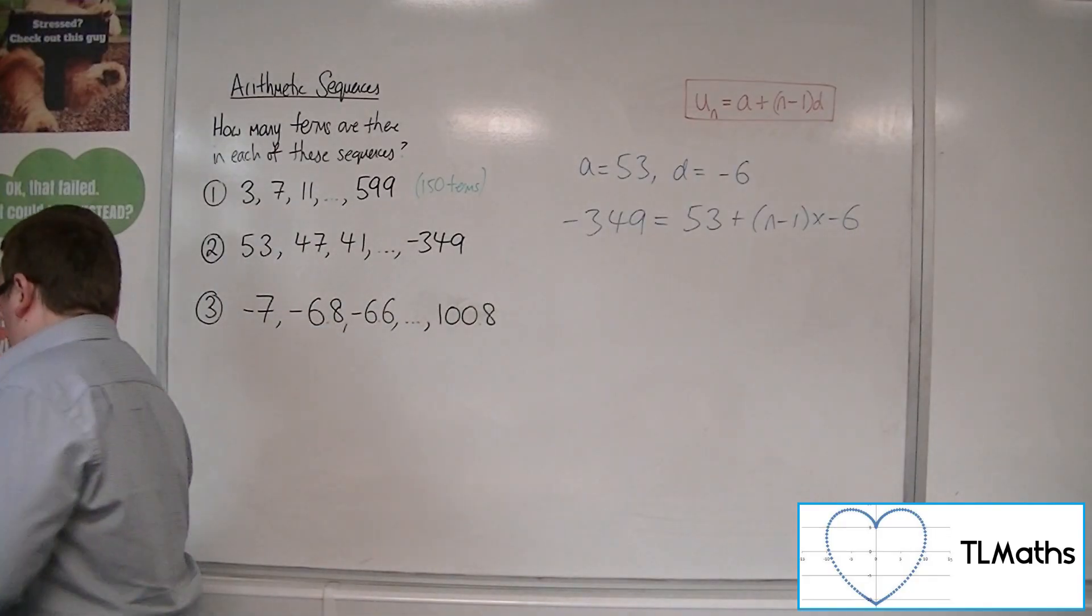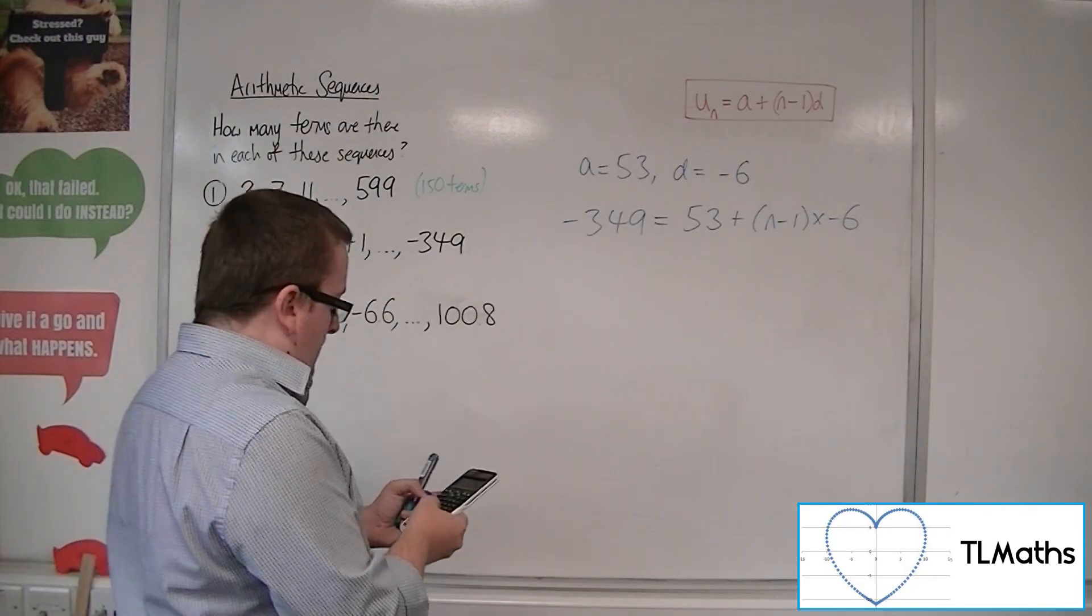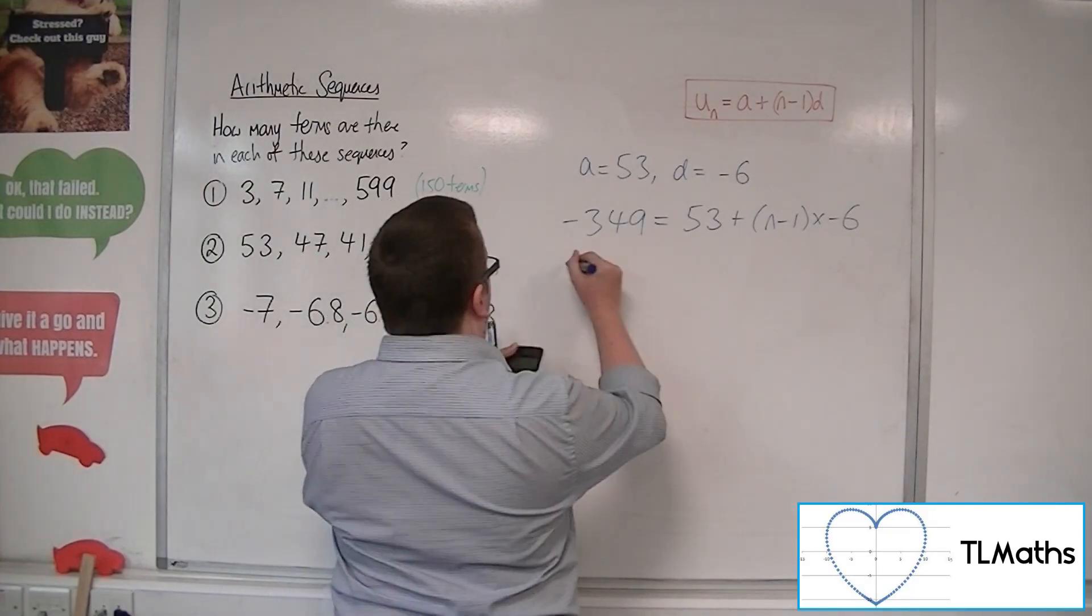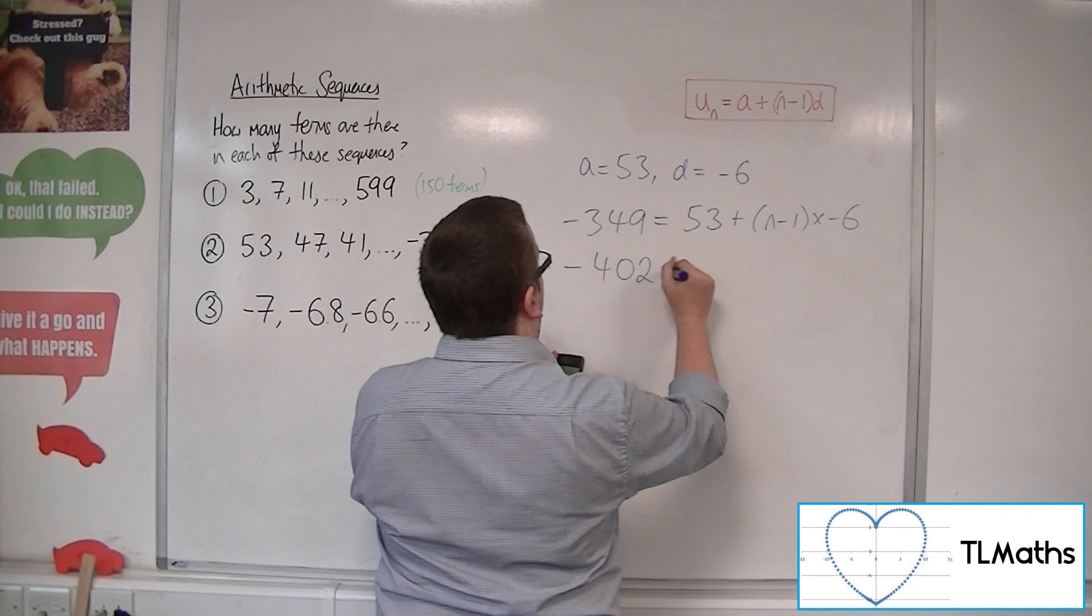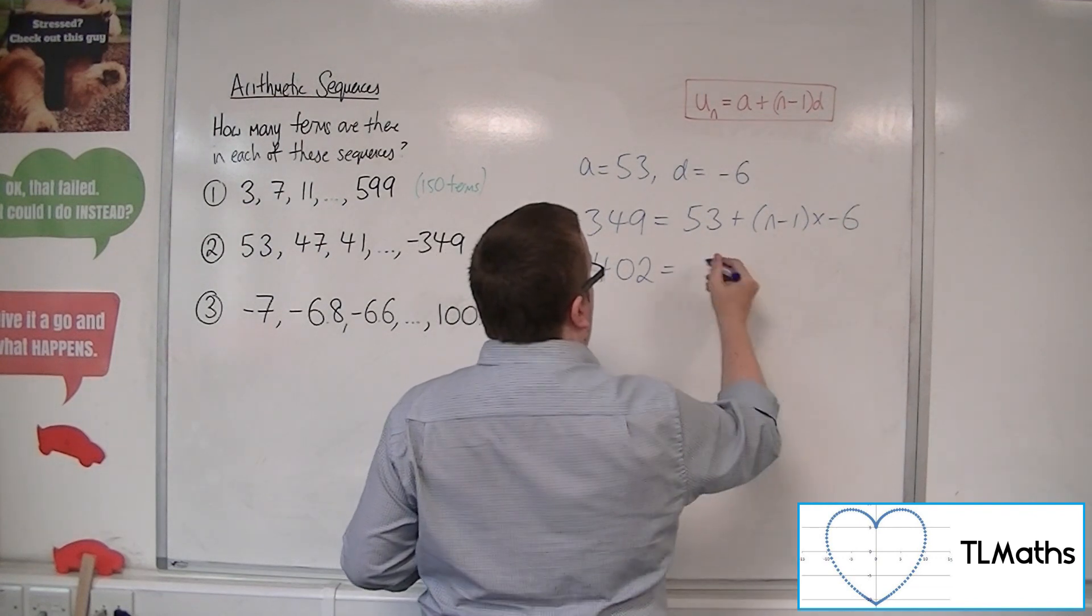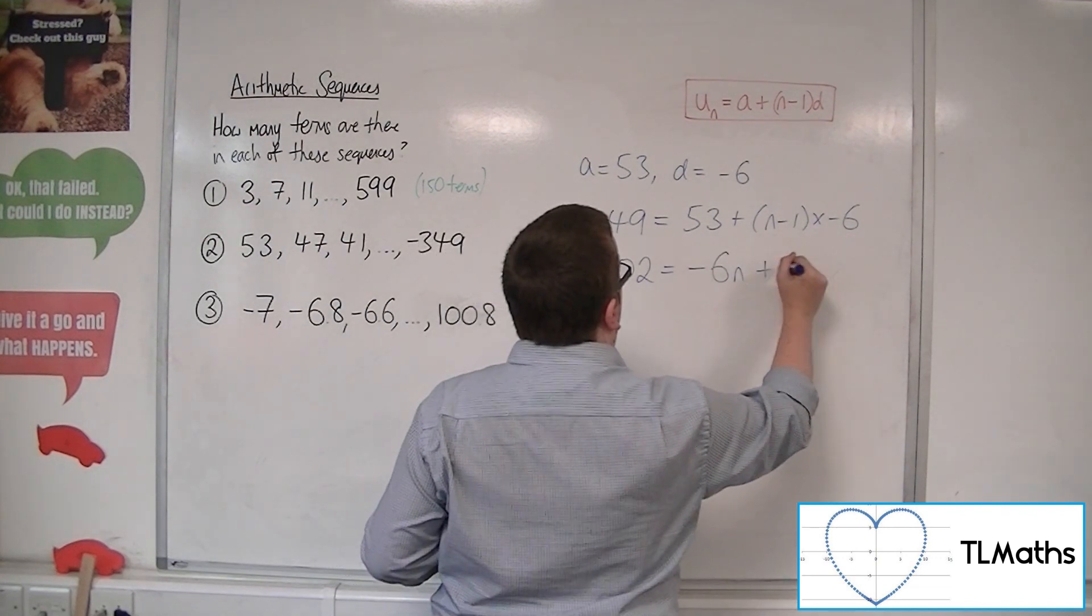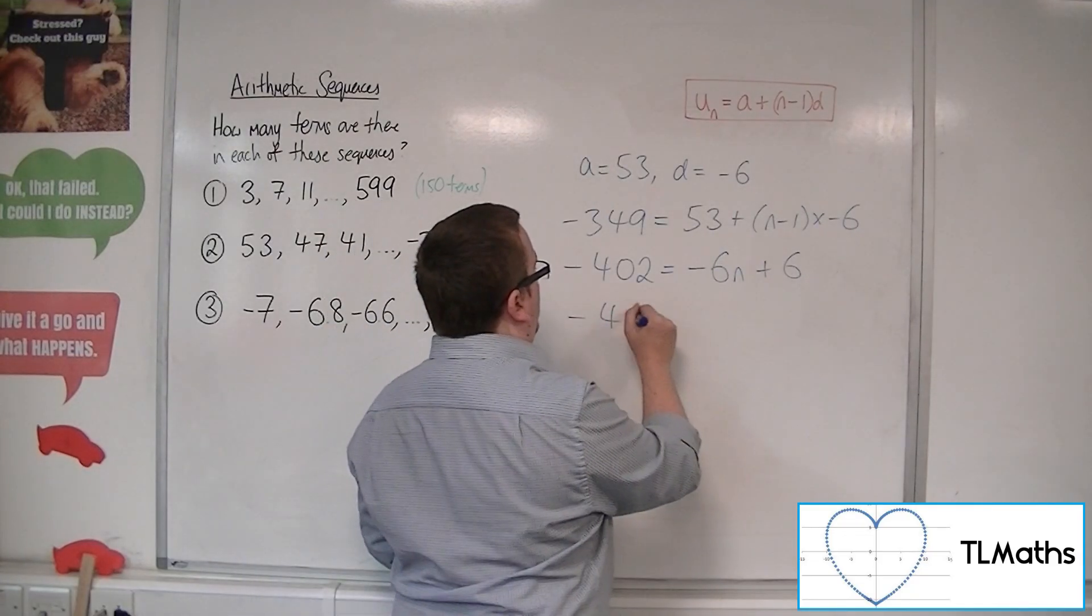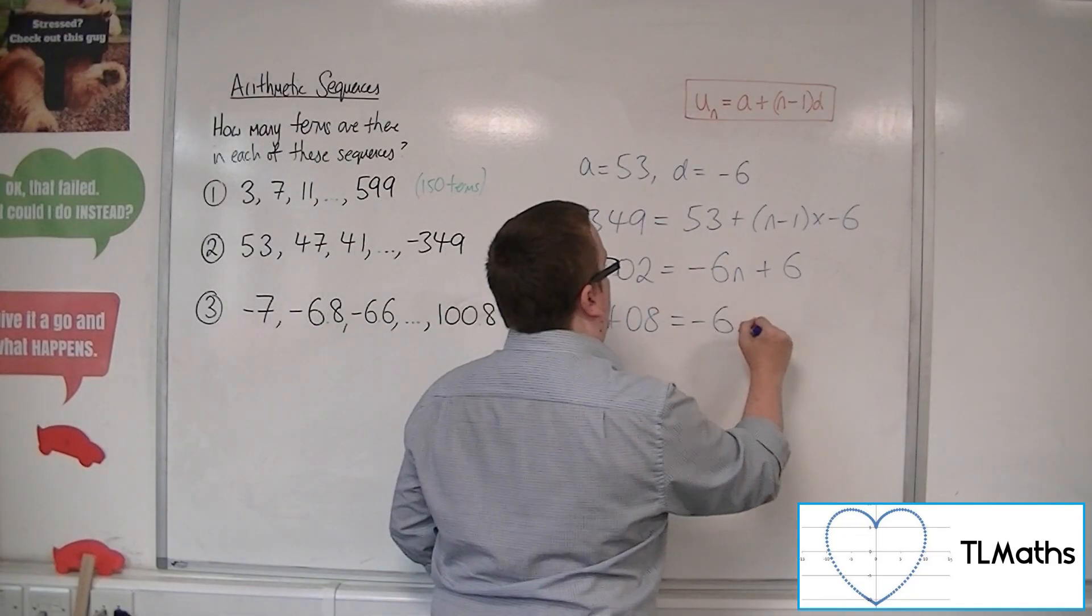So, I'm going to bring out the calculator for this one. So we've got the minus 349. Let's take that 53 from both sides. So that gets me minus 402 is equal to, well I'm going to multiply that bracket as well. So minus 6n plus 6. Subtract the 6 from both sides, so minus 408 is minus 6n.